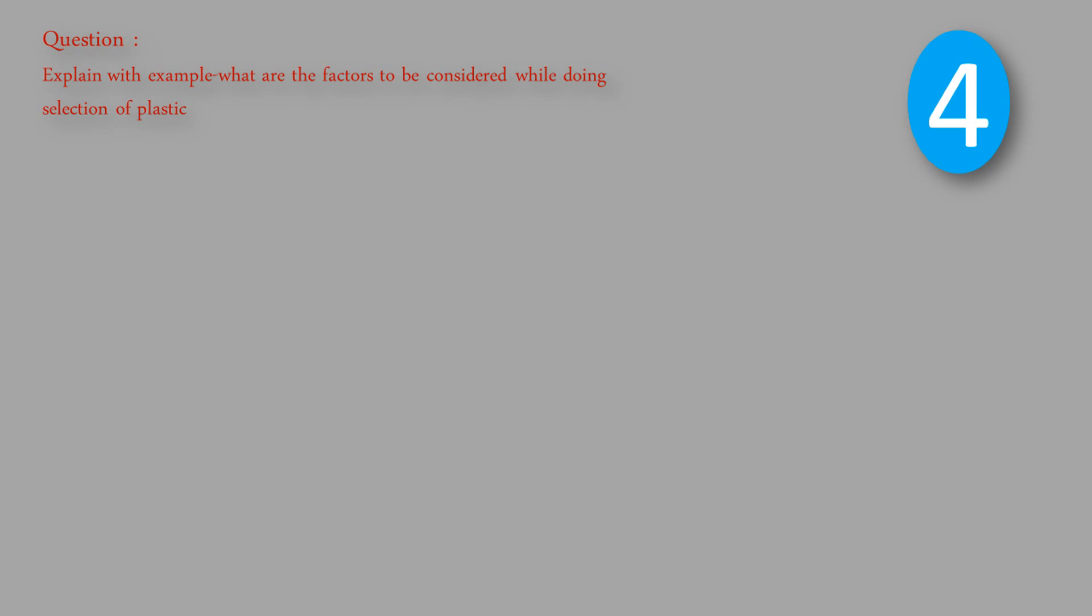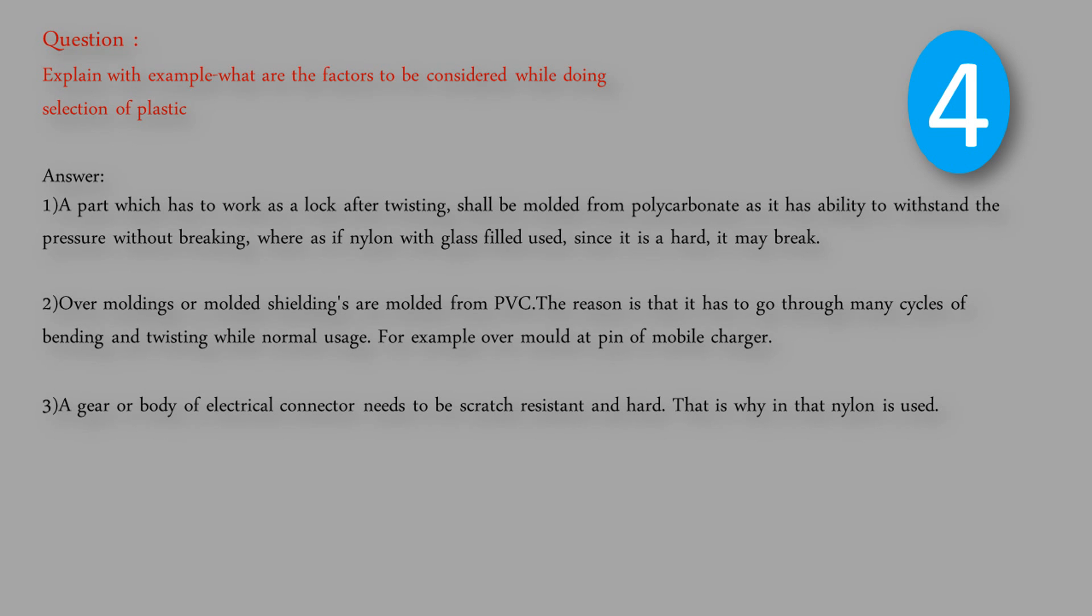Question: Explain with example what are the factors to be considered while doing selection of plastic. Answer: A part which has to work as a lock after twisting shall be molded from polycarbonate as it has ability to withstand the pressure without breaking, whereas if nylon with glass filled is used, since it is hard, it may break.